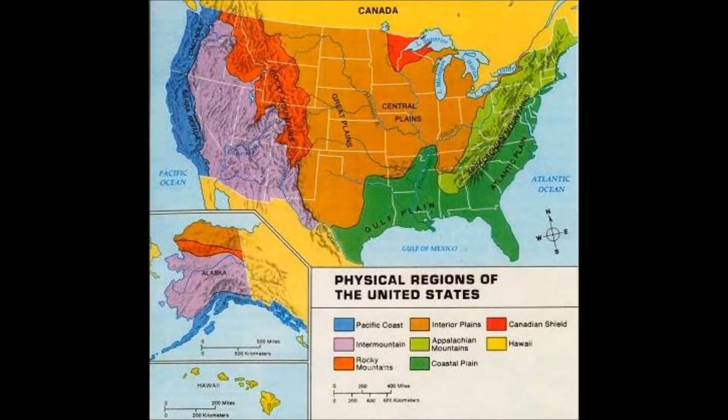The physical geography of the United States is one of vast and varied landscapes which divide the country into six main regions: the coastal plains, Appalachian Mountains, Interior Plains, Rocky Mountains, Intermountains, and Pacific Coast.